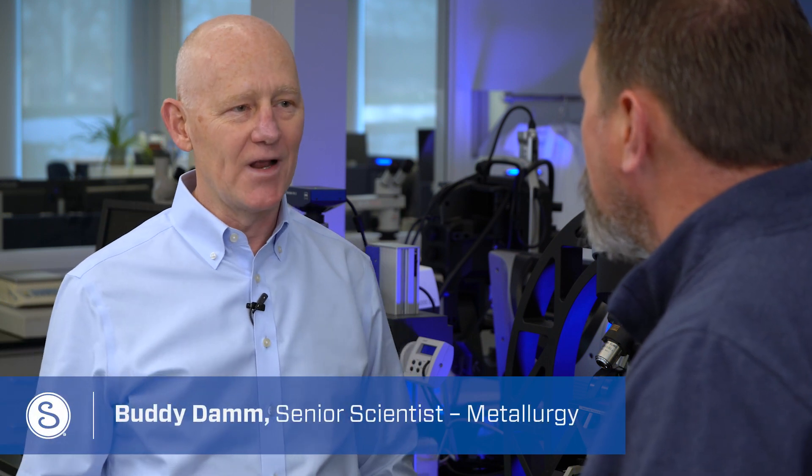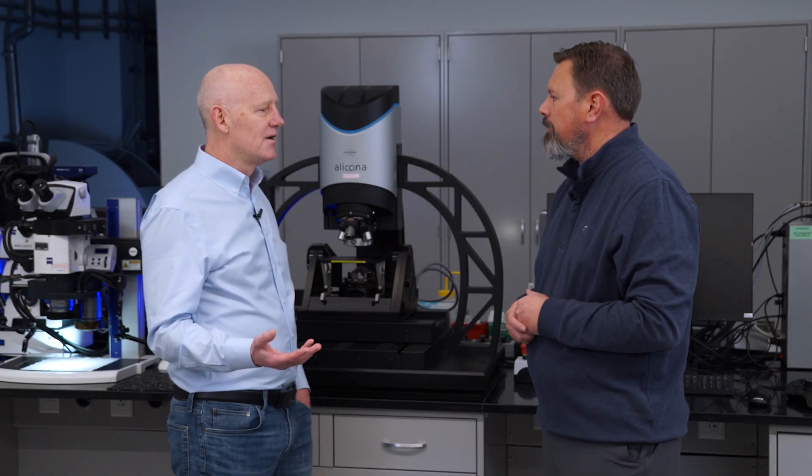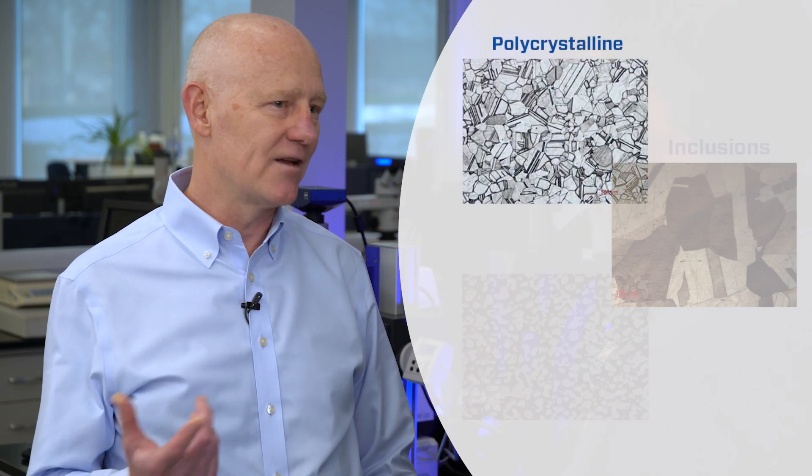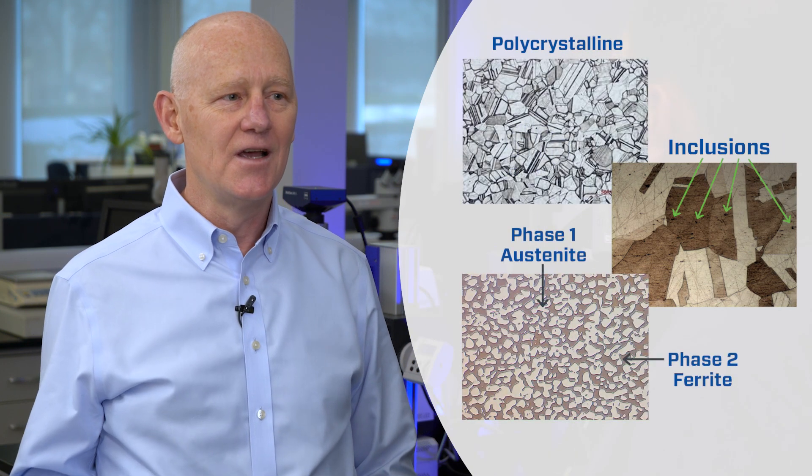Hydrogen embrittlement is one of several different types of metallurgical embrittlement phenomena. What embrittlement means is a loss of ductility, fracture resistance, or fatigue resistance relative to some baseline. Engineering alloys are polycrystalline, meaning they're made up of many crystals. They have second phases and they have inclusions.